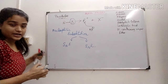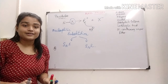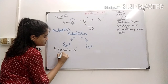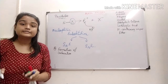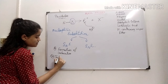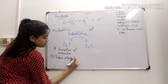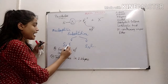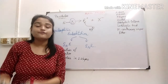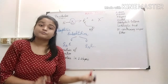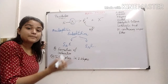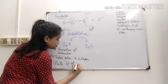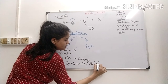In case of SN1 reaction, the foremost criteria that must be present is the formation of a carbocation in the intermediate. This takes place in two steps. It is called SN1 because the rate of the reaction depends only on the concentration of the substrate.